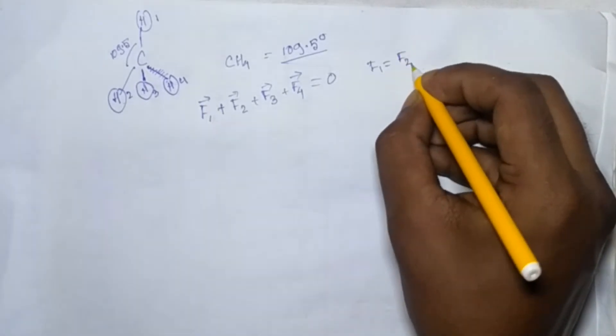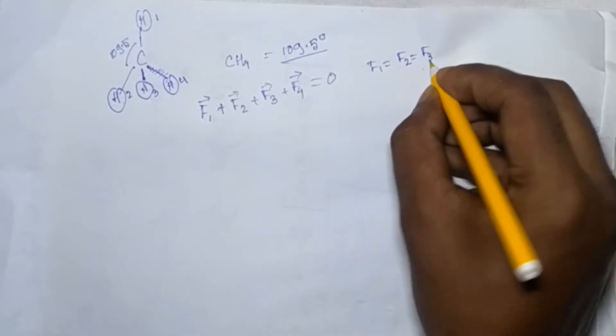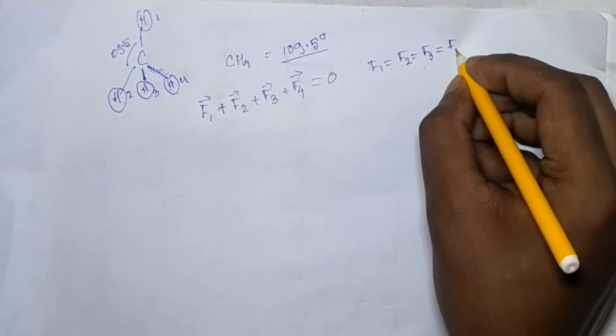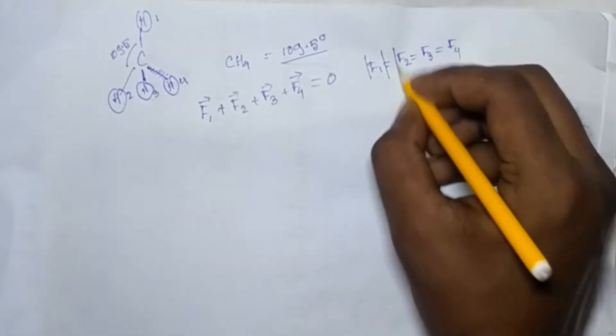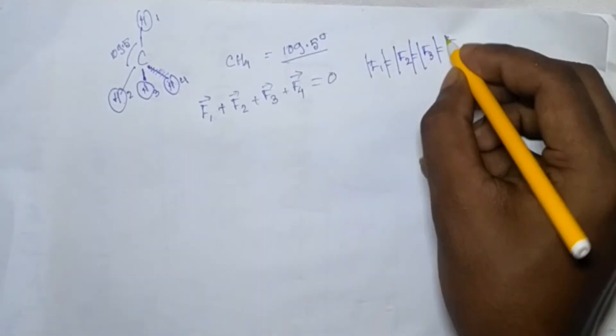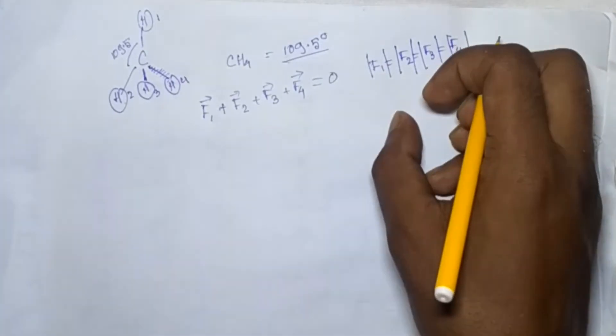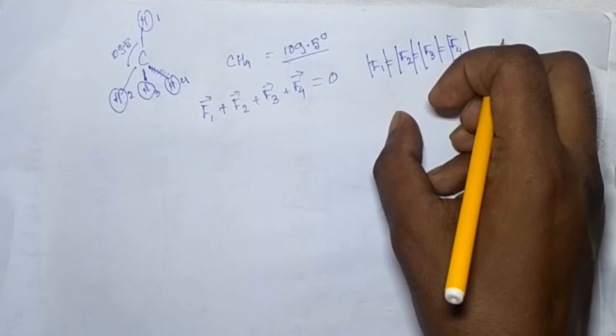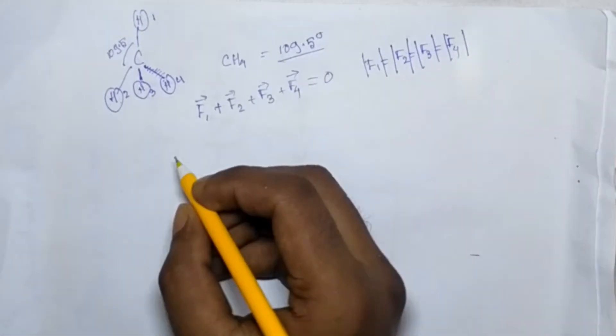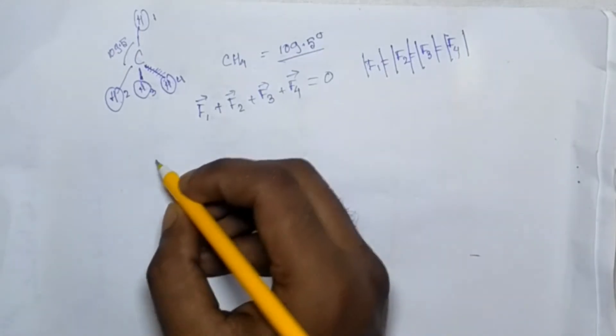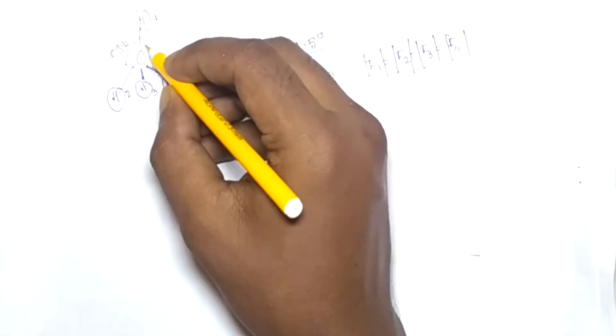And the modulus, not the direction, that means the difference of these F1, F2, F3, F4 is for their direction but their modulus is the same.